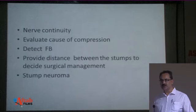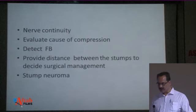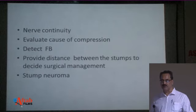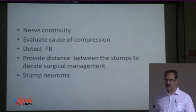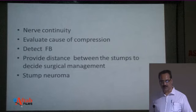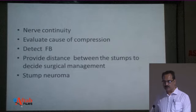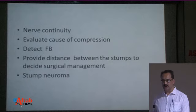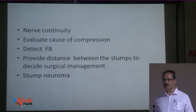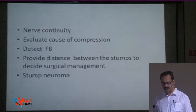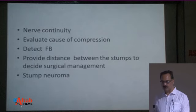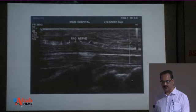Ultrasound reveals whether nerve fibers are in continuity or disrupted, and evaluates the cause of compression. If a foreign body is present, it can be detected and removed for good patient outcomes. It also gives information about the distance between the two nerve stumps, which determines the length of the nerve graft required — very helpful for the surgeon — and provides information about stump neuroma formation.